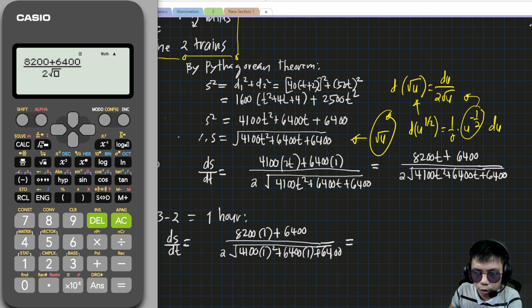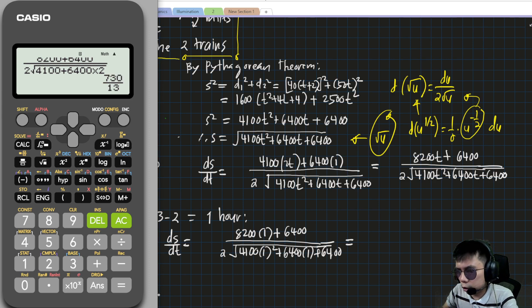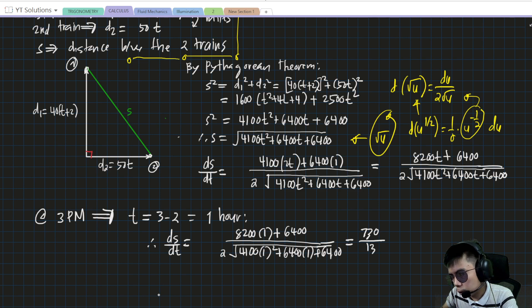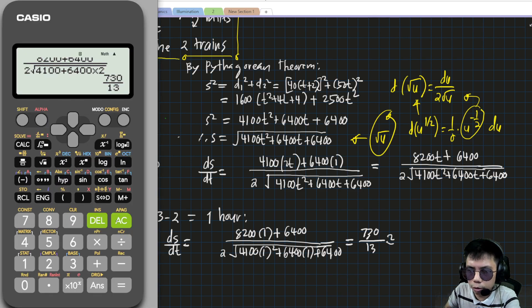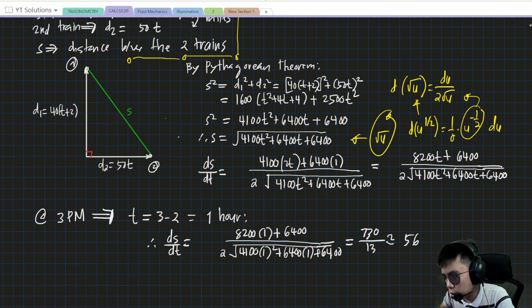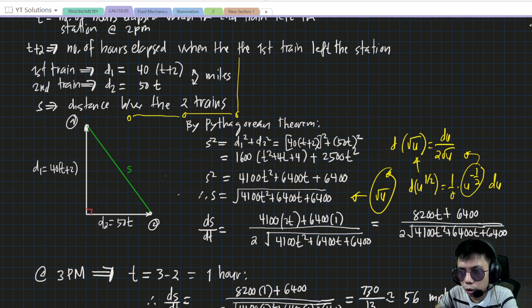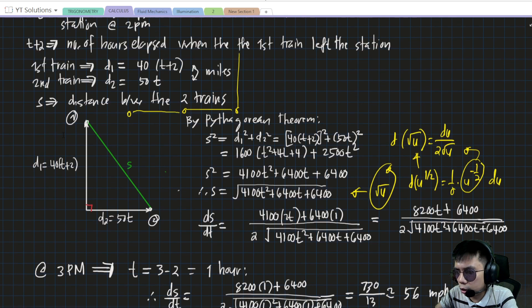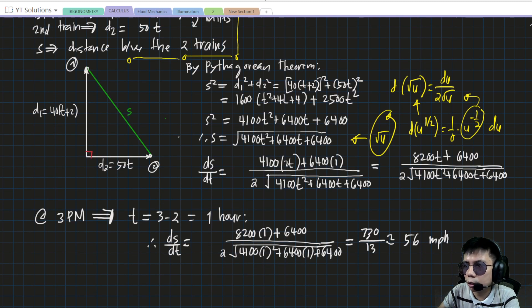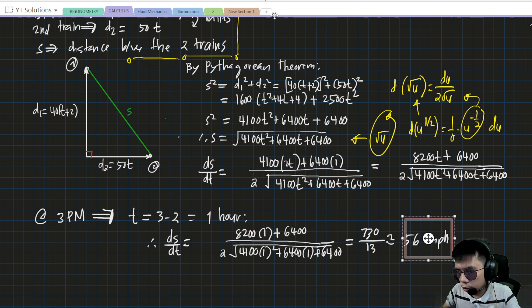That's 14600 / [2√(4100 + 6400 + 6400)] = 14600 / [2√16900] = 7300/130. Converting to decimal form and rounding to the nearest mile, that's approximately 56 miles per hour. Among the three choices, 56 is letter B, so that is our answer.